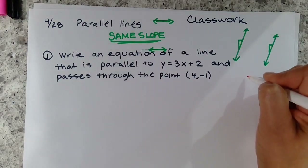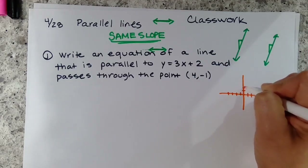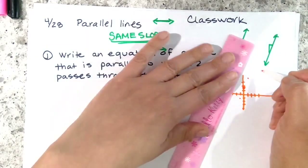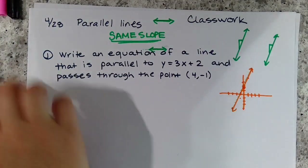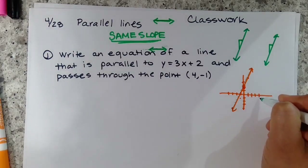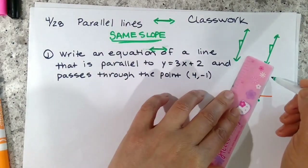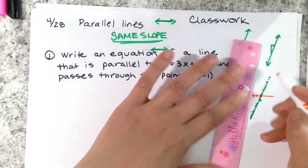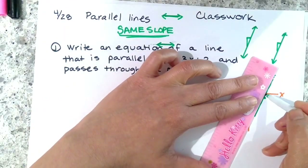The equation y equals 3x plus 2 has a y-intercept of 2 and a slope of up 3 over 1, so the graph looks like this. The point (4, -1) is going to be down here. If the new line is parallel, it has the same slope, so it looks something like this. The only problem is I don't know where on the y-axis it's going to cross.